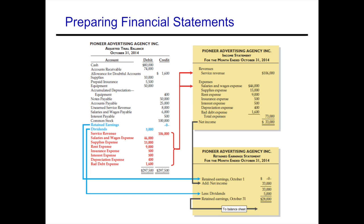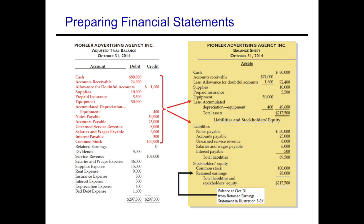That ending retained earnings number flows through to the equity section of our balance sheet. We then pull all the assets, liabilities, and other owners' equity accounts into our balance sheet. Total assets come to $217,500, and once we add in ending retained earnings, liabilities plus owners' equity is also $217,500.